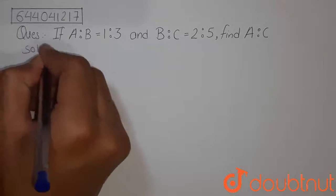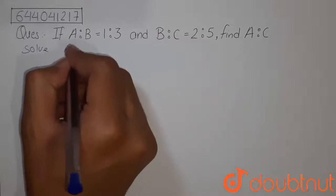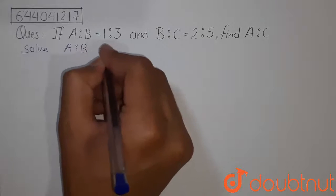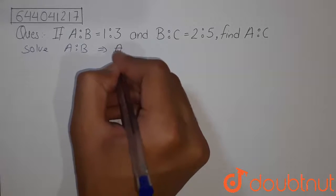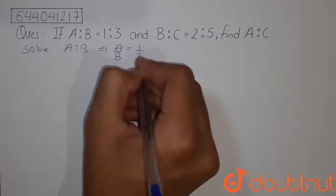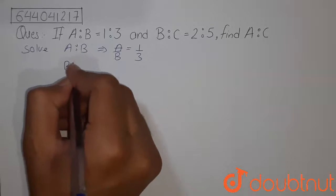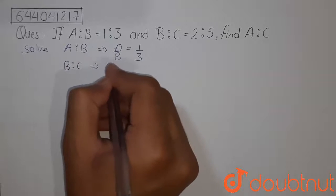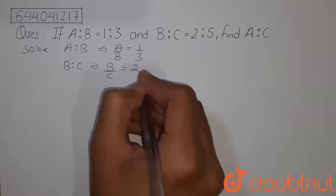In this type of question, first we will write the given thing that is A ratio B. We can write it as A by B is equals to 1 by 3 and B ratio C. We can write it as B by C is equals to 2 by 5.